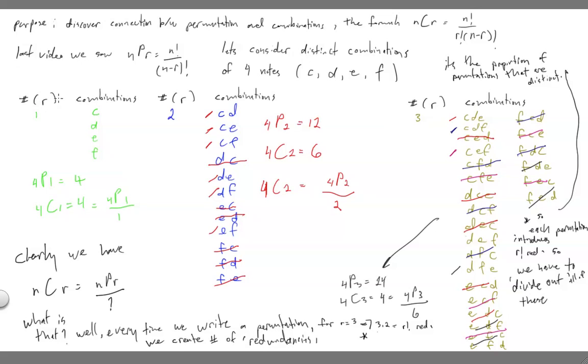Now in the case where we're talking about only one object that we're choosing from the four, this is the same as for the permutations. You can either choose C or D or E or F. Those are all distinct. And since they're just single elements, there's no chance to see any duplicates. And so we would say that four choose one is just going to be four.